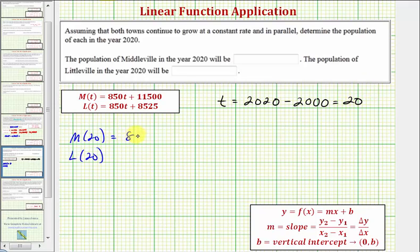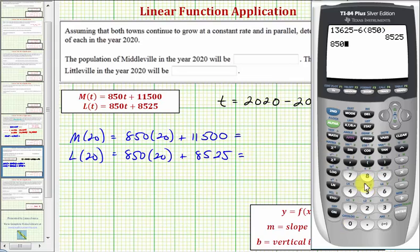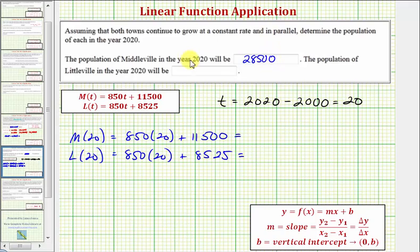So for m(20), we'd have 850 × 20 + 11,500, and for L(20), we'd have 850 × 20 + 8,525. And let's go back to the calculator. So 850 × 20 + 11,500 gives us the population of Middleton in the year 2020. And then for Littleville, we'd have 850 × 20 + 8,525. So the population for Littleville would be 25,525. So again, we have 28,500 here, and we have 25,525 for Littleville.